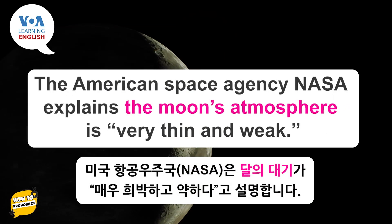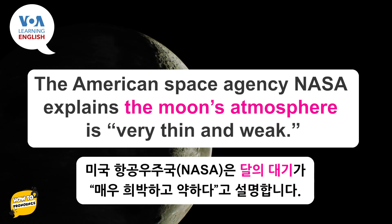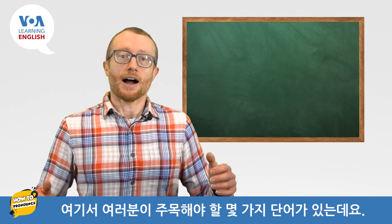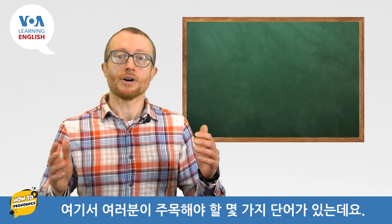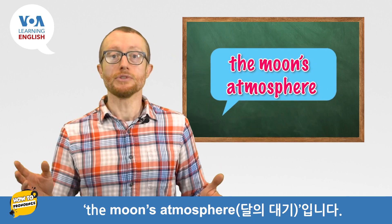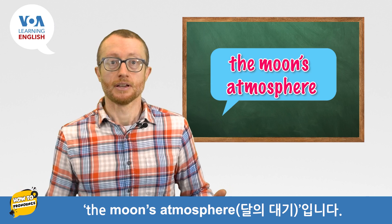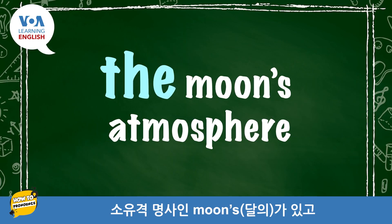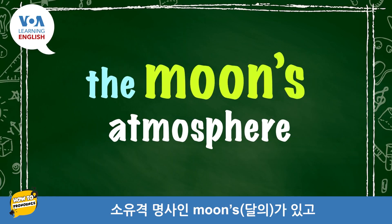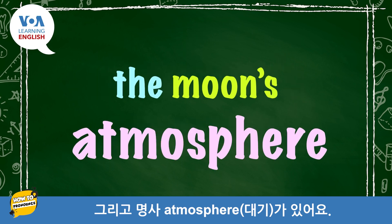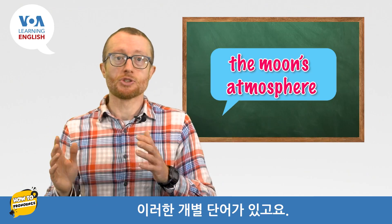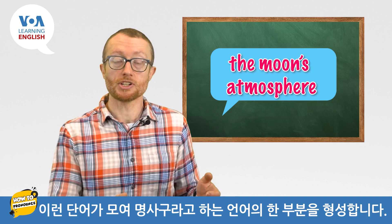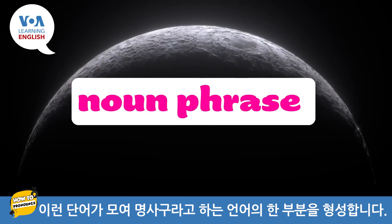The American Space Agency, NASA, explains the moon's atmosphere is very thin and weak. I'd like to draw your attention to a few words: the moon's atmosphere. We have an article, the word 'the,' the possessive noun 'moon's,' and the noun 'atmosphere.' These individual words together form a piece of language known as a noun phrase.